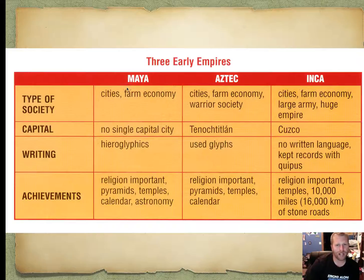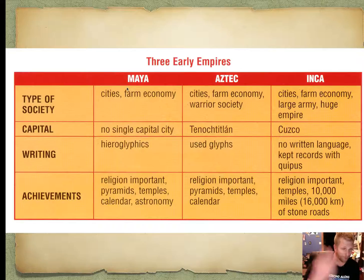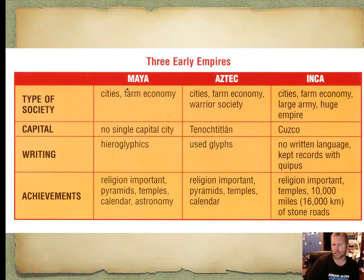You can see here a little chart. You have the Maya, the Aztec, and the Inca. The Maya had cities and a farm economy, but no single capital city. They used hieroglyphic writing, and religion was big — pyramids, temples, calendar, astronomy.